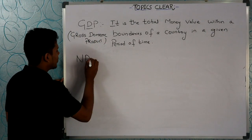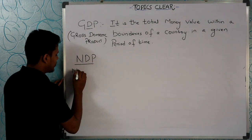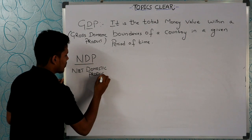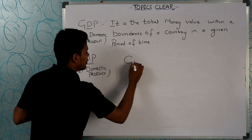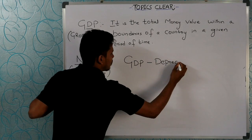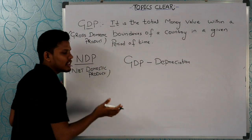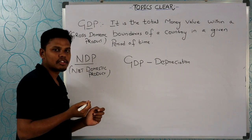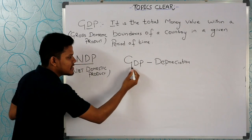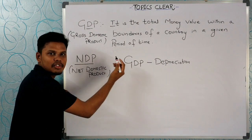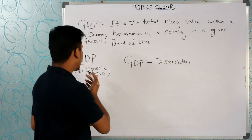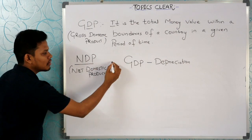The next topic is NDP — Net Domestic Product. NDP is calculated as GDP minus Depreciation.